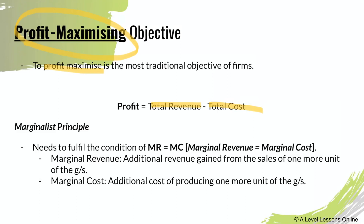Price times quantity equals total revenue — similar to what we covered back in PED. So profit equals total revenue minus total cost. In order to increase profit, you want to either increase your total revenue or reduce your total cost. Profit maximization can only be achieved at MR equals MC — when marginal revenue equals marginal cost. This is called the marginalist principle.